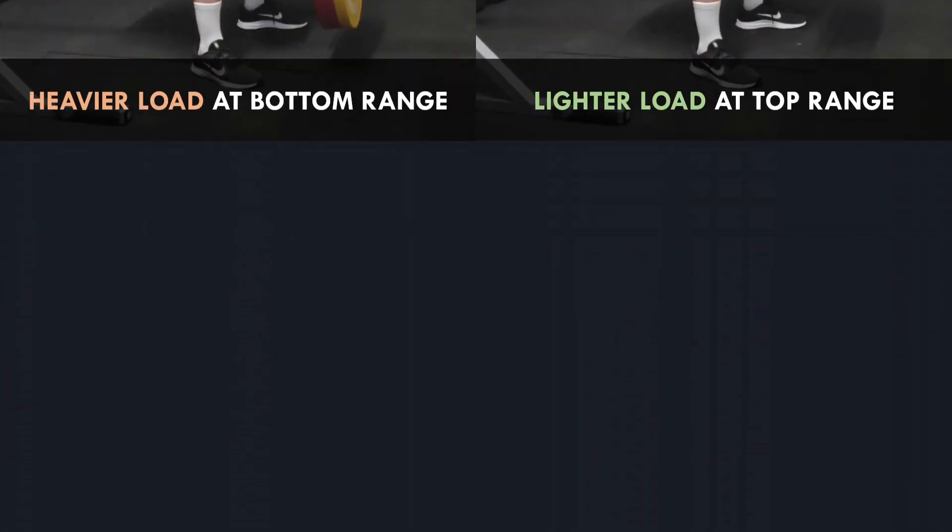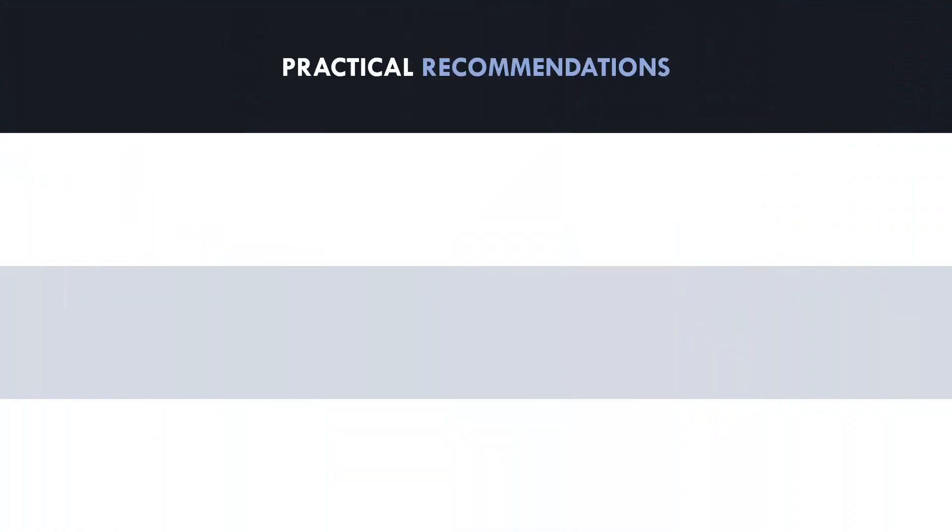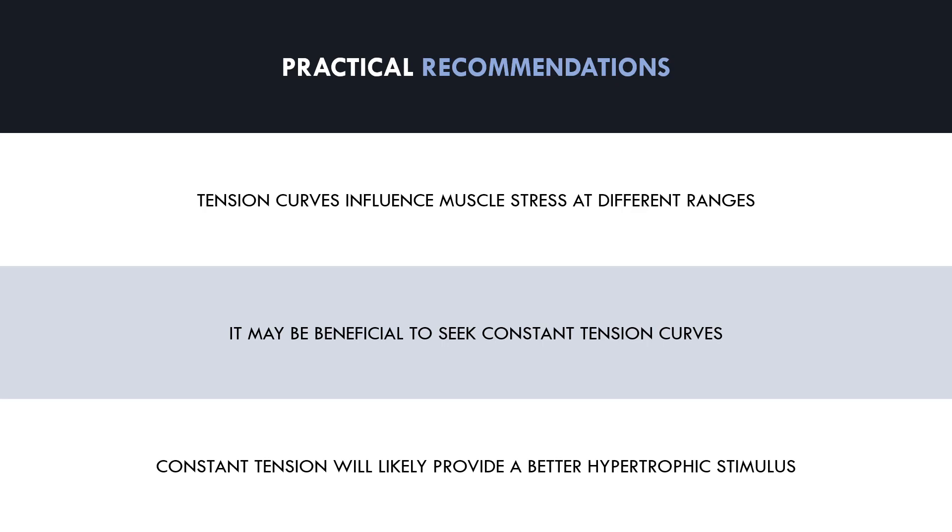So to summarize this topic, let's explore some practical recommendations. First we should understand that different exercises have different tension curves. This may impact hypertrophy outcomes by how the stress is distributed on the muscle. Some exercises naturally have a reasonably constant tension curve, while others have a drastic difference at various portions of the lift. Therefore it may be beneficial to manipulate some exercises to provide a more constant tension curve. This can be achieved by performing exercises which match the tension curve of the muscle group that you are trying to train.